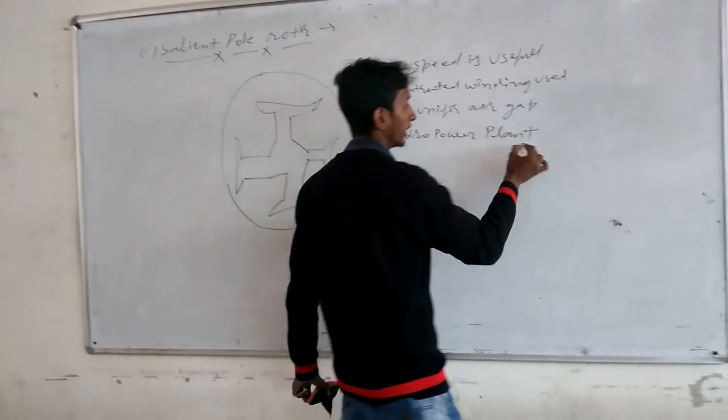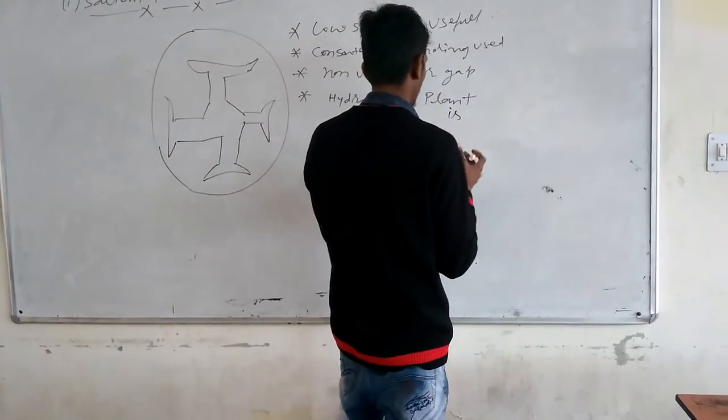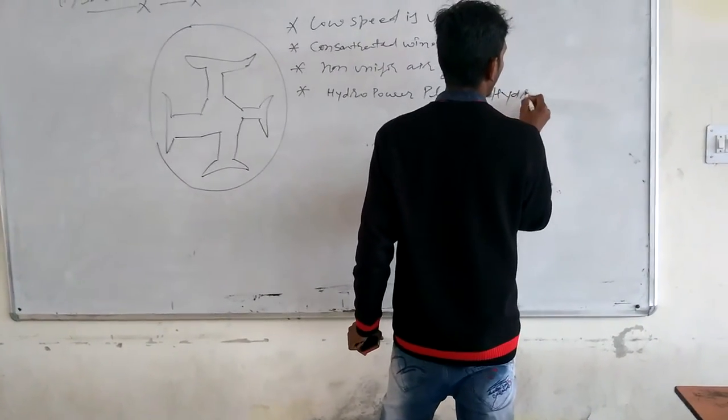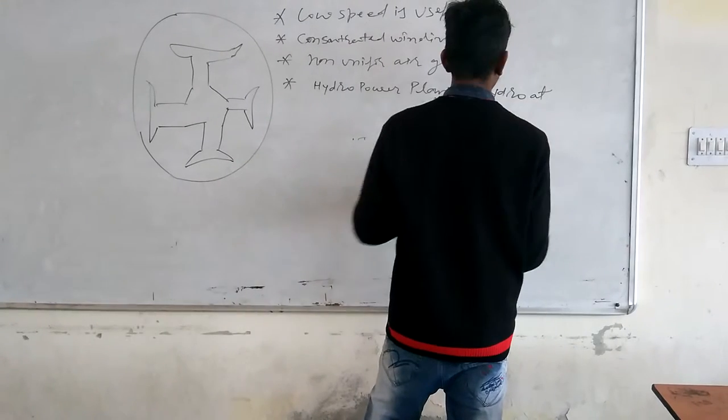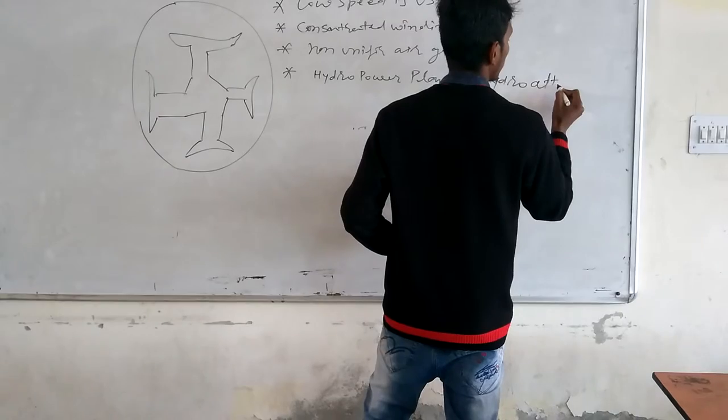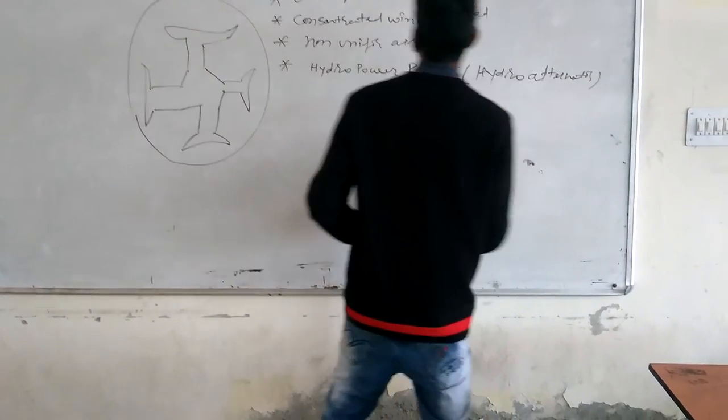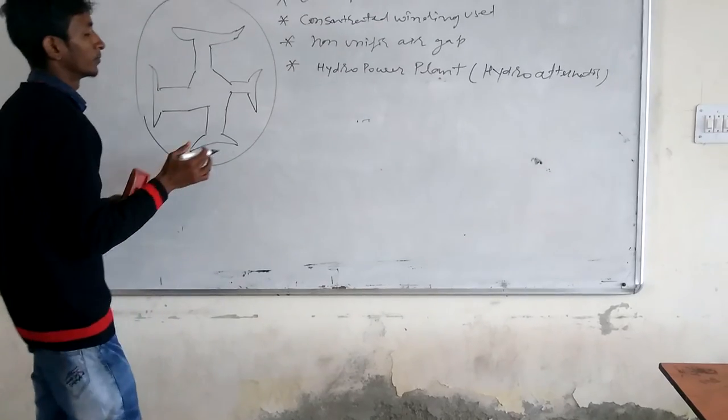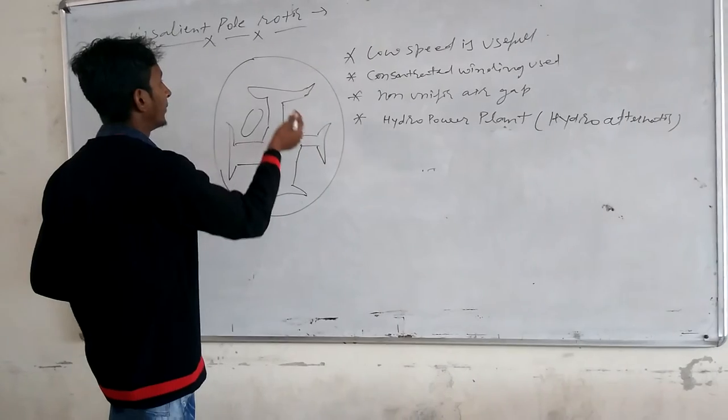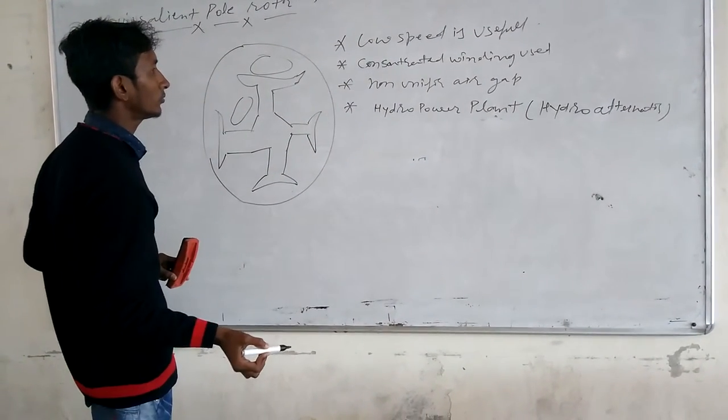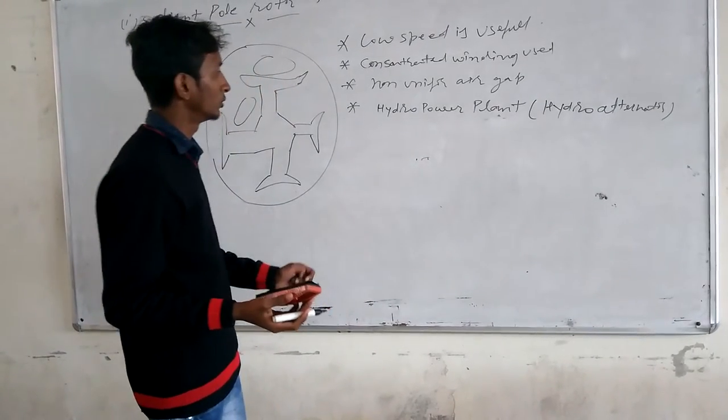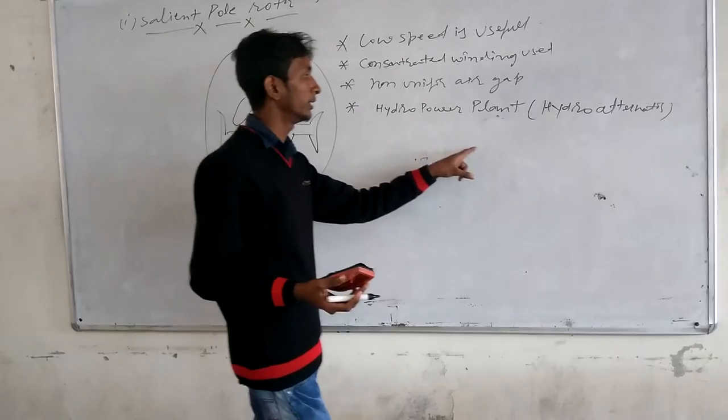It is also known as hydro alternator. Maximum air gap between poles and minimum area. Salient pole rotor is used in hydropower plant with generated electricity.